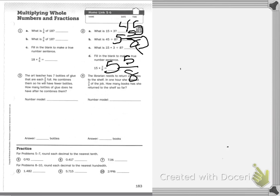Number 4 says, the librarian needs to return 24 books. So up here, I'm going to write 24. In one hour, she finished 3/4 of the job. How many books has she returned to the shelf so far? So I know my numbers, 24 and 3/4.